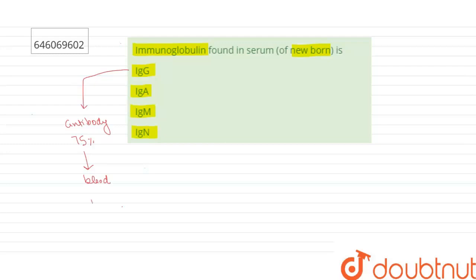The primary immunoglobulin of the newborn baby is maternal immunoglobulin G, because this is the only immunoglobulin to cross the placental barrier.